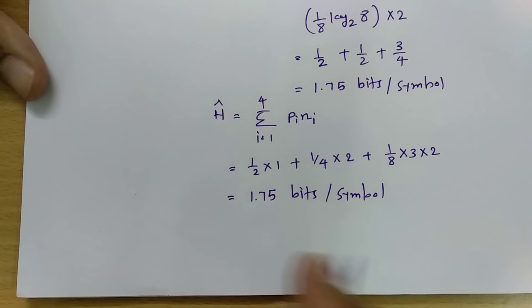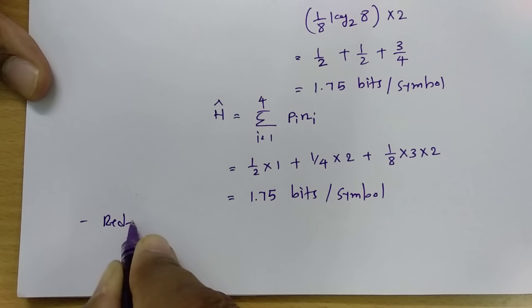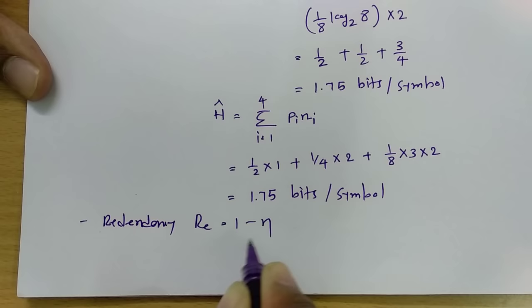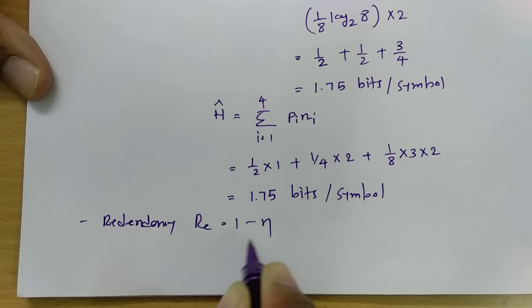Efficiency is 100% and redundancy = 1 minus efficiency = 0. This is how we identify efficiency and redundancy using Shannon-Fano encoding. In the next session, I will explain a more complex example to make this concept clearer. Note down all the steps mentioned. Thank you for watching — if you have any questions, write them in the comments and I will get back to you.